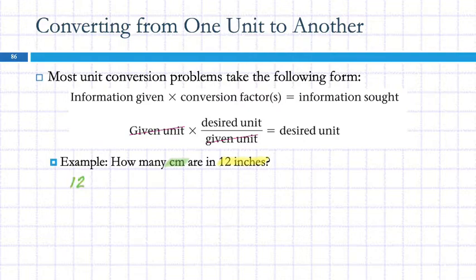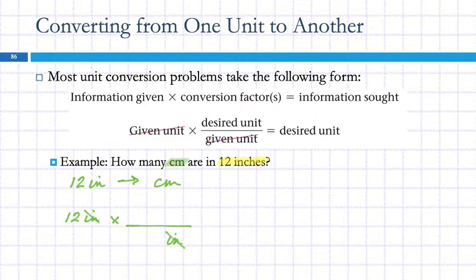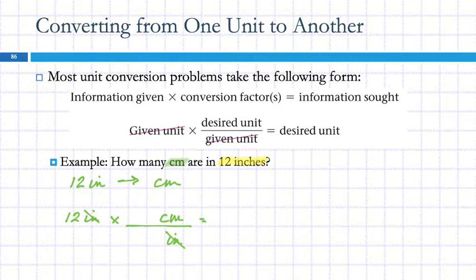So: 12 inches. I'm going to use a conversion factor. I want inches to go away, so I want inches in the denominator so they cancel out. I want centimeters in my final answer, so the desired unit goes on top and is not canceled out. One inch is 2.54 centimeters. Use your calculator: 12 times 2.54. The calculator gives 30.48 centimeters.